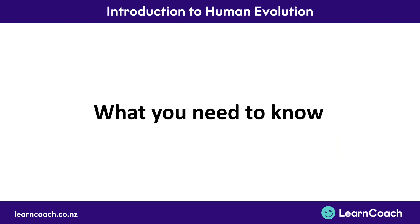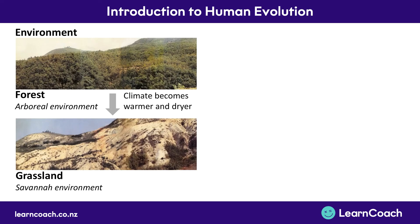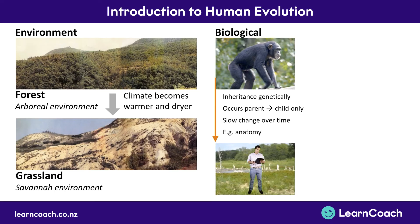Here's what you need to know from this video: the environment changed from a forest environment to a grassland, and that led to biological evolution where we inherit genetic material. That only goes in the direction of parent to child and it's a slow change over time — for example, our anatomy, how we physically look.